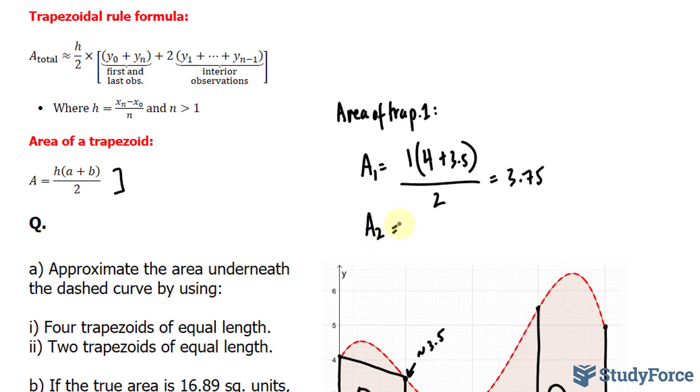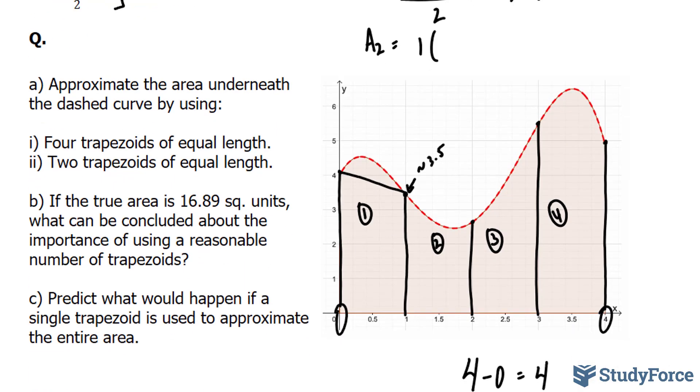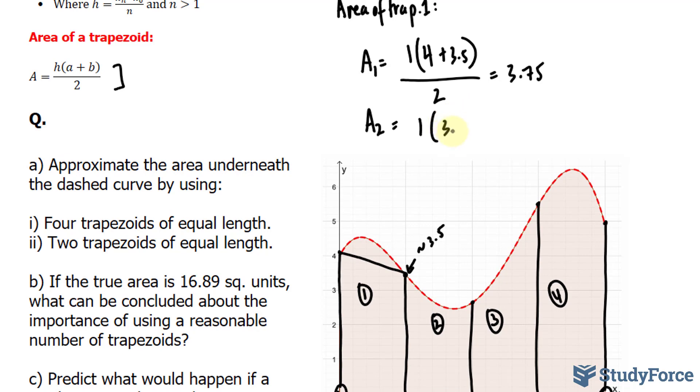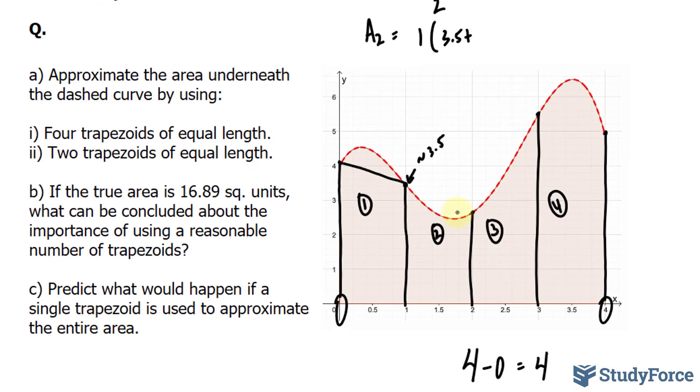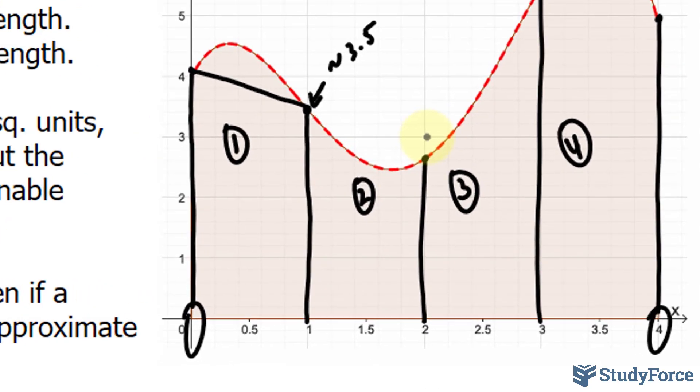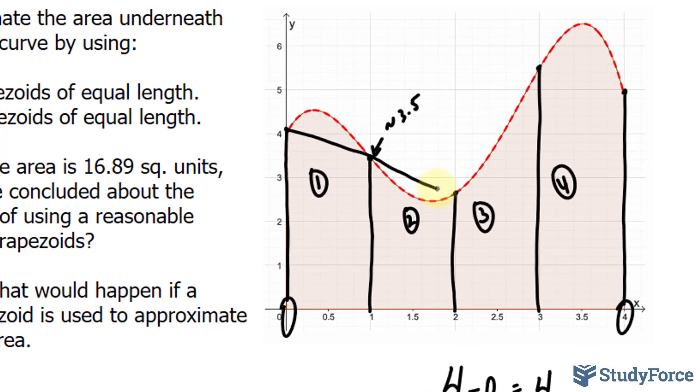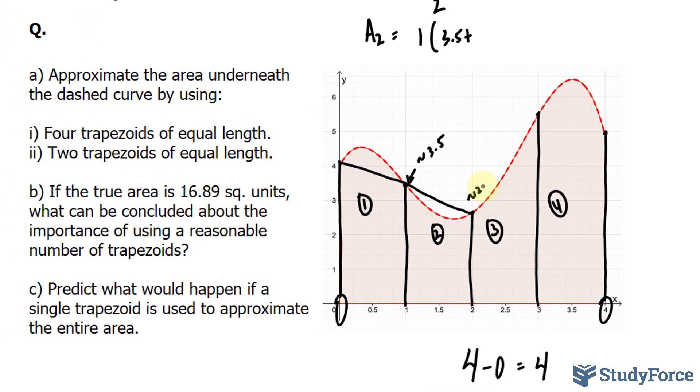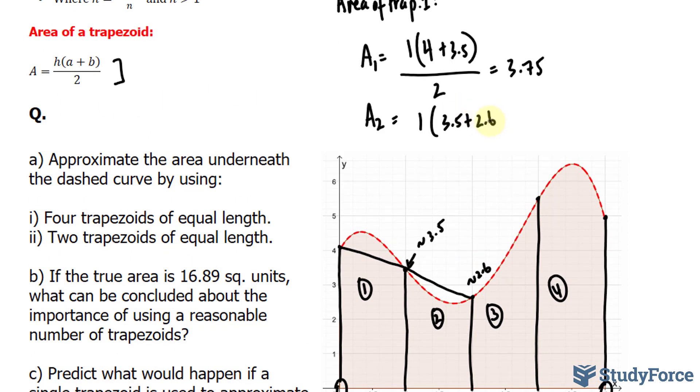Okay, now we have to find the area of trapezoid 2. h is equal to 1, don't forget. And the length from here to here will be the same as the previous trapezoid. So, we'll write down 3.5 plus, but what does change is the length from here to here. That's new to us, and it looks to be around 2.6. So, I'll connect this. And that has a length of around 2.6. So, 3.5 plus 2.6, all divided by 2, should give an output of 3.05. And you can verify that on your calculator. So, here we have 3.75 units squared, and here we have 3.05 units squared.